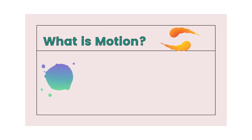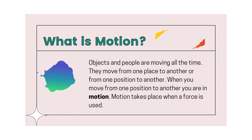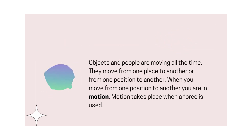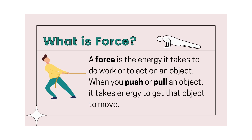Now, what is motion? When people or things move from one place to another or from one position to another, that change in position is called motion. Motion can only take place when a force is used. So the big question then is, what is force? A force can be defined as the energy it takes to act on an object or to do work. This energy can take several forms — it could be a push, a pull, or even a turn. When we push, pull, or turn an object, most times it will cause motion.